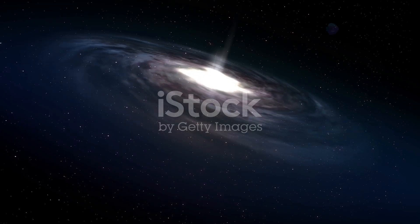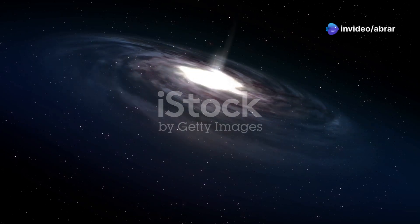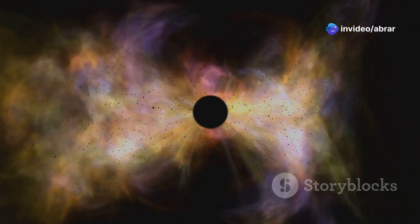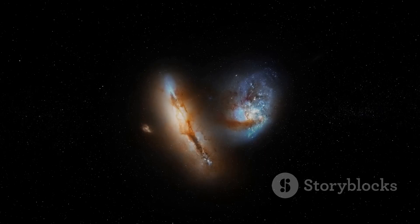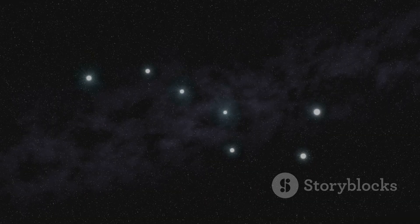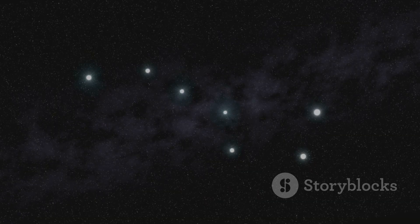This unlucky galaxy is caught in the grip of a quasar's gravity. Streams of gas and dust are being pulled from the galaxy. They spiral towards the center of the quasar. The galaxy is being ripped apart. Its stars are scattered like dust in the wind.